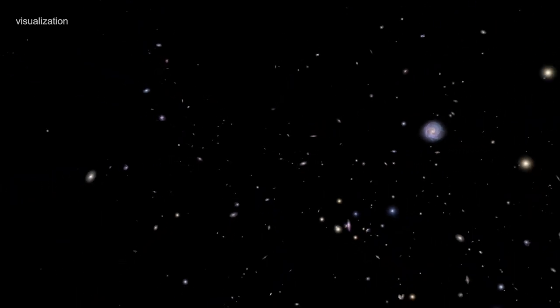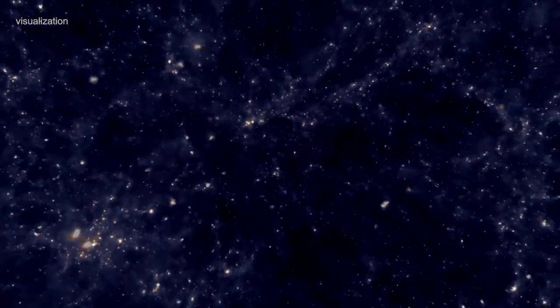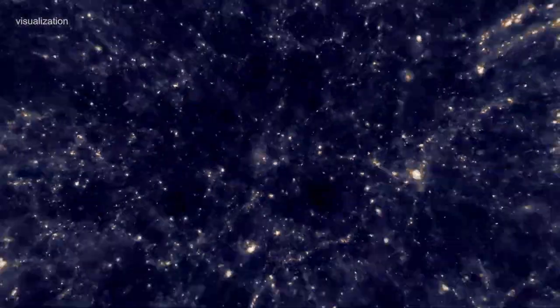The Cosmic Web is a vast network of filaments and clusters of gases and galaxies that weave around cosmic voids, spanning millions of light-years across the universe. Astrophysicists predicted its existence in the 1960s, and through observation and computer modeling, we have been able to map this vast structure.